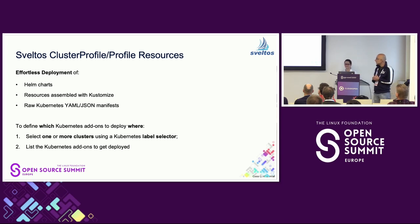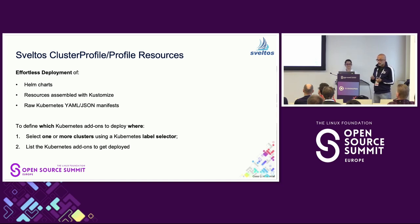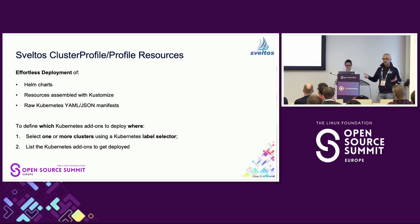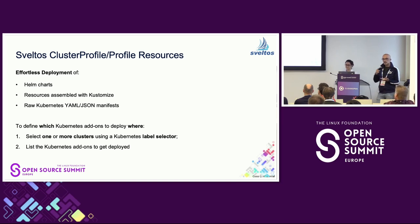Both ClusterProfile and Profile are essentially the same resources except one is namespaced. They allow selecting a set of clusters using a cluster selector — a Kubernetes label selector. Any managed cluster is represented by a cluster resource; you add labels to it, use the cluster selector to match a subset, and then list the applications to deploy. Those can be Helm charts, Kustomize resources, or raw YAML or JSON — Sveltos can handle all of them.